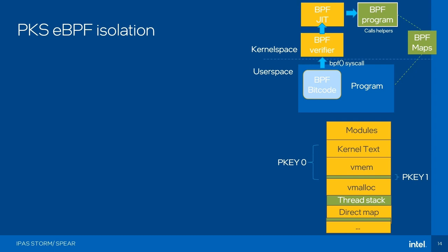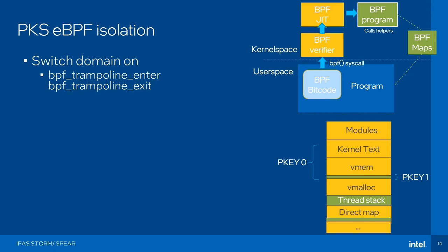Now, onto how we can isolate eBPF with this PKS compartmentalization. On the right you see the same picture — the BPF program loaded into the verifier, JIT-compiled, and then the program can run. We have this compartmentalization with protection keys as shown before. Basically what we need to do is switch into the non-privileged domain when we enter a BPF program. When we call the function BPF trampoline enter — or any of the other intercept points depending on context — we switch into our non-privileged domain by writing to the MSR. When we exit BPF, we switch back to our privileged domain — like normal kernel — so that we have access to everything. So when you enter a BPF program, you have two extra MSR writes.